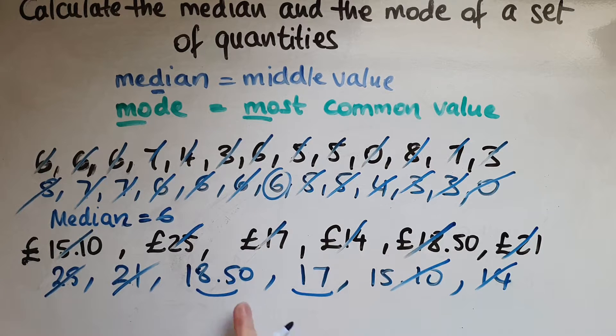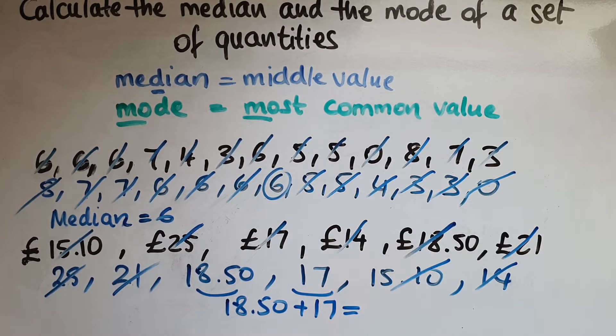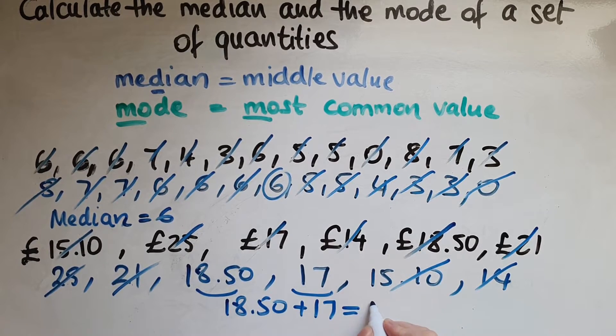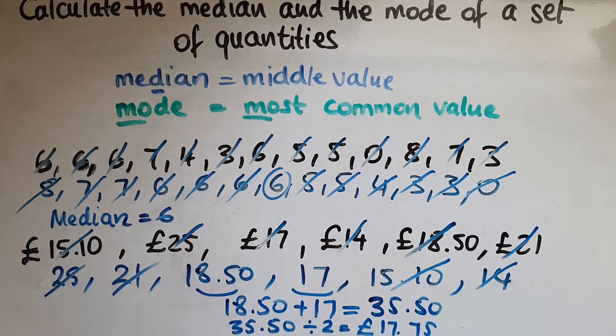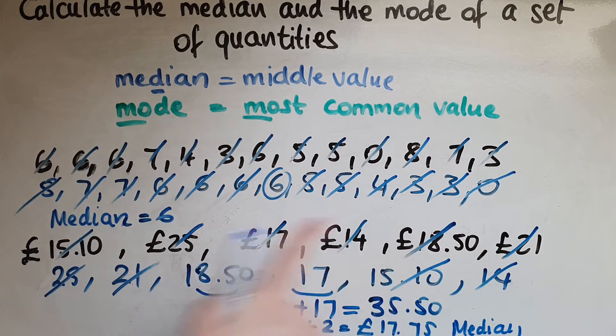So what are we going to do now? We're going to add them together and divide by 2. So 18.50, add the 17, gives us 35.50. And dividing this by 2 now gives us 17 pounds 75. So this is the median for this set of quantities.